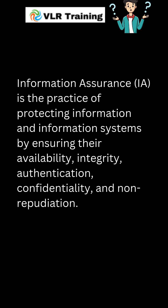Information Assurance, IA, is the practice of protecting information and information systems by ensuring their availability, integrity, authentication, confidentiality, and non-repudiation.